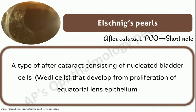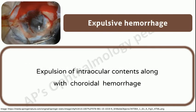Elschnig's pearls: a type of after cataract consisting of nucleated bladder cells that develop from proliferation of equatorial lens epithelium. To know more about Elschnig's pearls and after cataract, you may click on the link above to watch my video on diminished vision in pseudophakia. Alternately, you can click on the link in the description box.